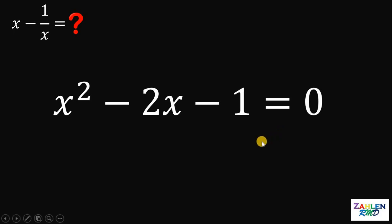Now, our goal is to find the value of x minus 1 over x. So, to get this expression, what we need to do here is to divide all terms by x.